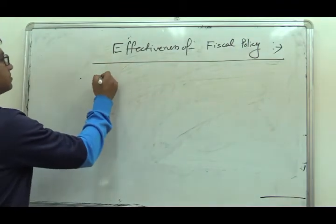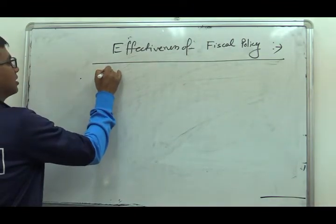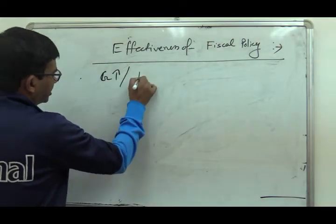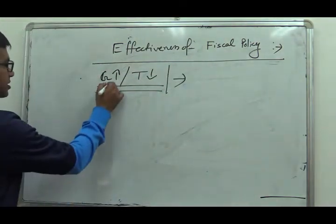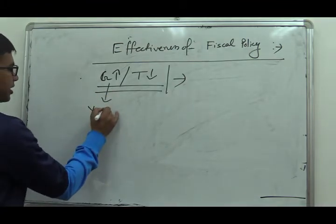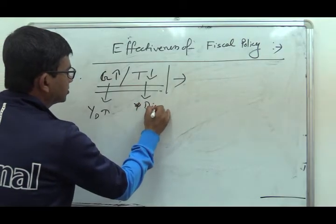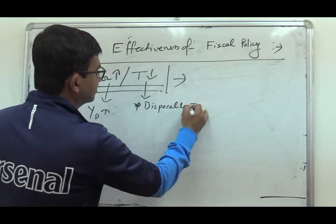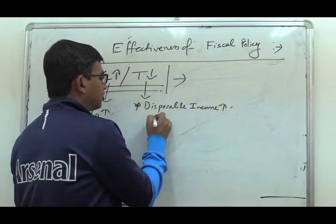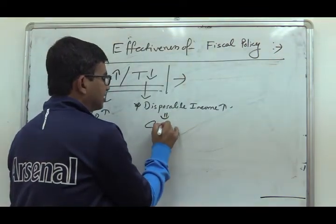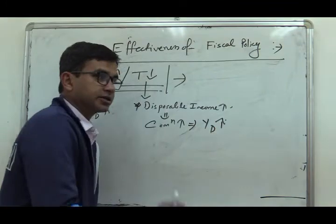If G increases, it will directly boost aggregate demand. Or if the tax rate falls, first we will see that disposable income will increase. An increase in disposable income will cause an increase in consumption, which is a part of aggregate demand, and Y will increase. This is the first step.